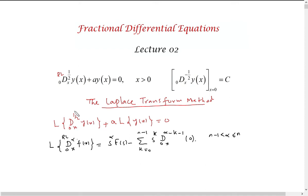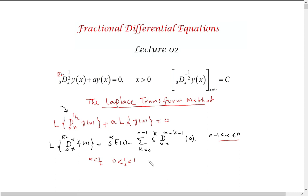We need to adjust this formula for our operator, because here we have order one-half. So take alpha equal to one-half. Since alpha lies between zero and one, and n is the next integer of alpha, alpha is one-half and the next integer is one, so n equals one.